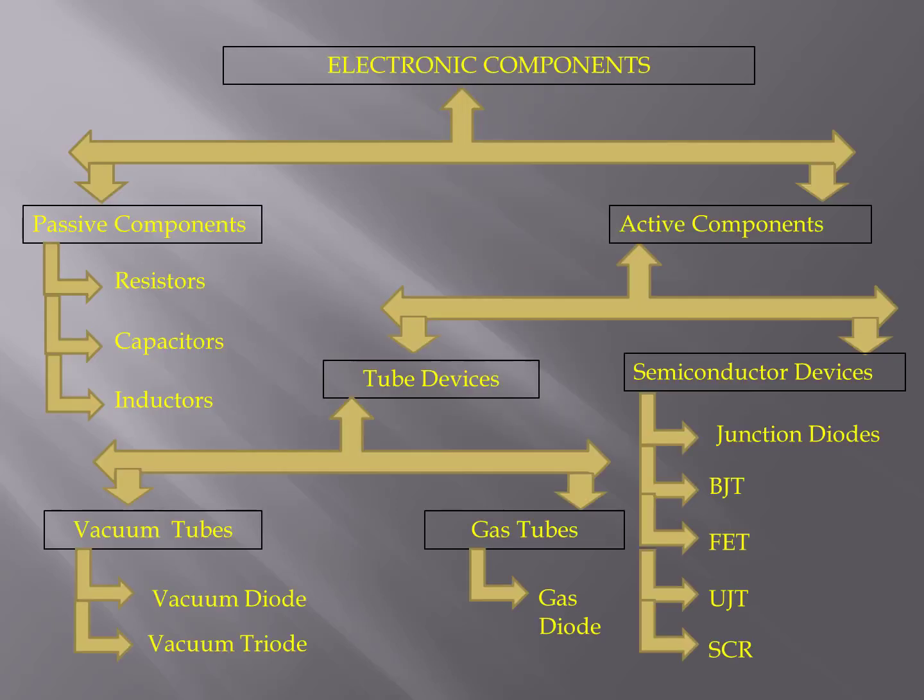Electronic components are broadly classified into two categories: passive components and active components. Resistors, capacitors, and inductors are considered as passive components, while semiconductor devices and tube devices are known as active components.